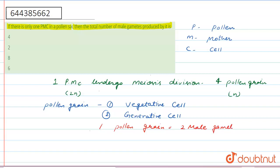And see here, the number of pollen grains is four. So we can say that four pollen grains form 2 times 4 equals 8 male gametes.